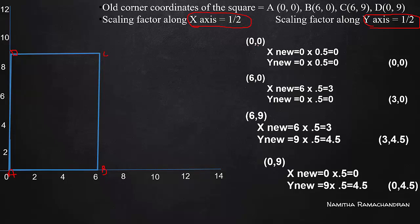For point (0, 0): X_new = 0 * 0.5 = 0, Y_new = 0 * 0.5 = 0. For point (6, 0): X_new = 6 * 0.5 = 3, Y_new = 0. For point (6, 9): new coordinate is (3, 4.5). For point (0, 9): new coordinate is (0, 4.5). We mark these new points to show the scaled rectangle.